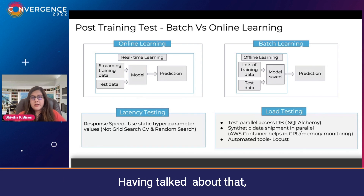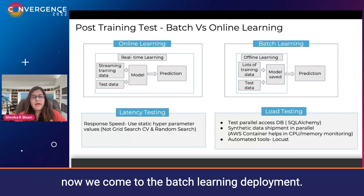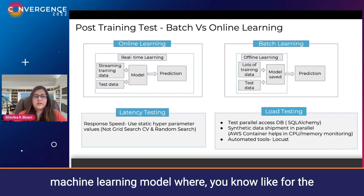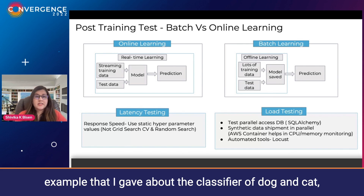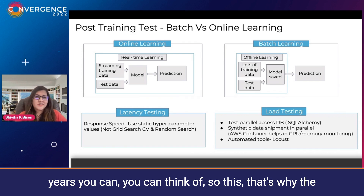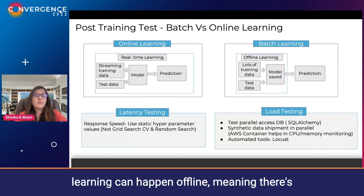Having talked about that, we come to batch learning deployment. This is something which is very commonly used in machine learning — like the example of a dog and cat classifier. Dog and cat faces will remain the same over many years, so the learning can happen offline.